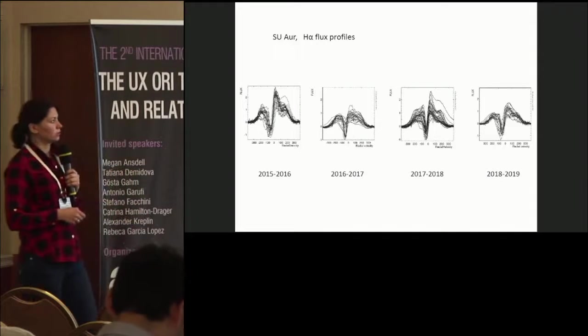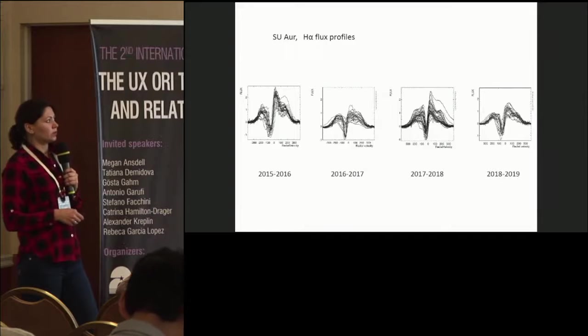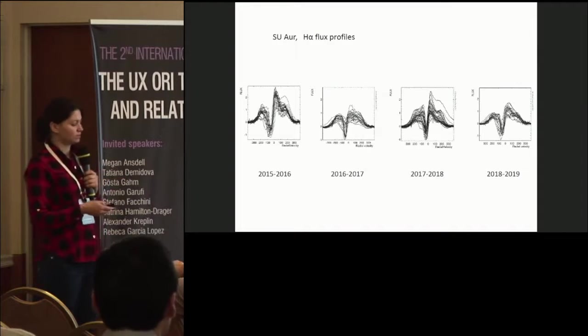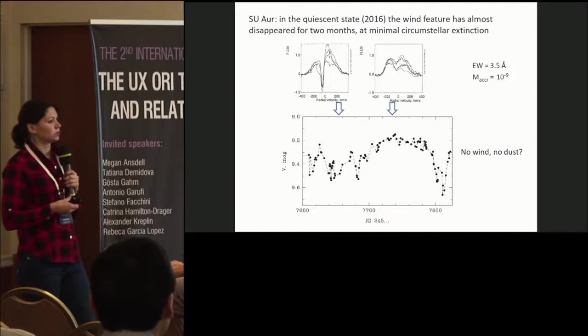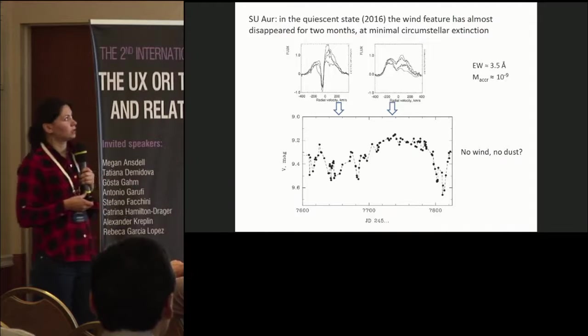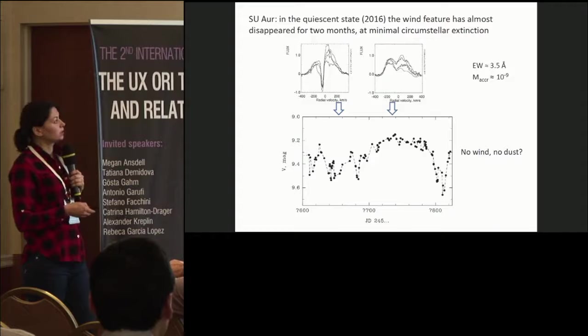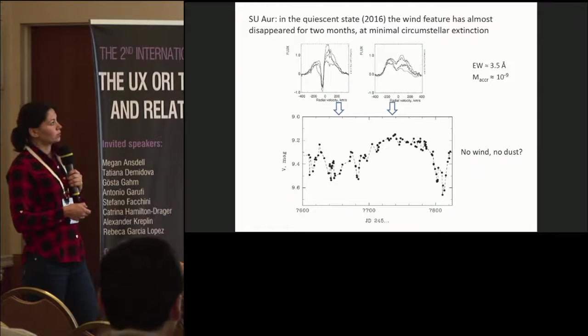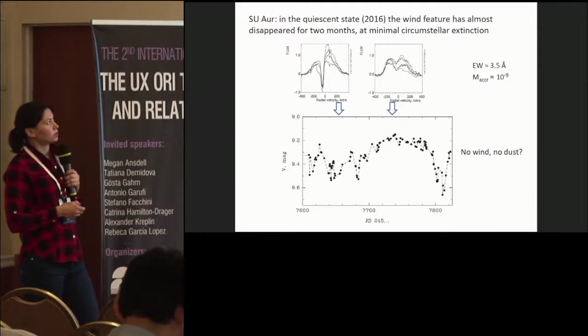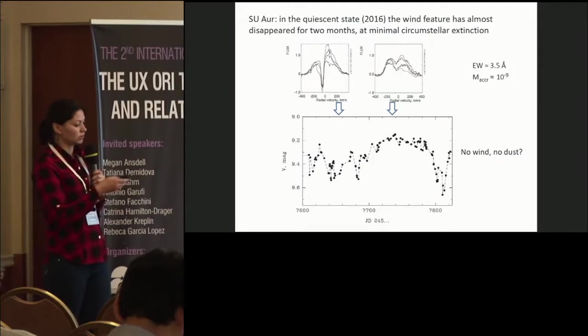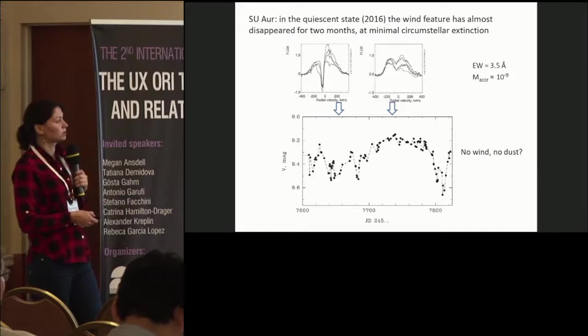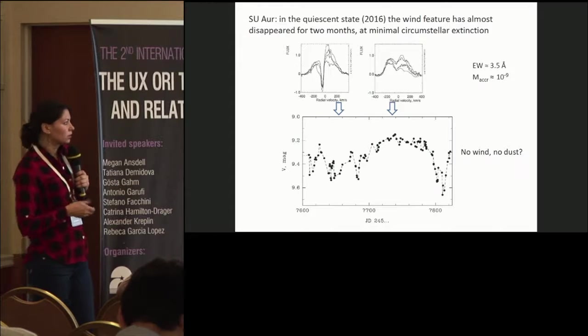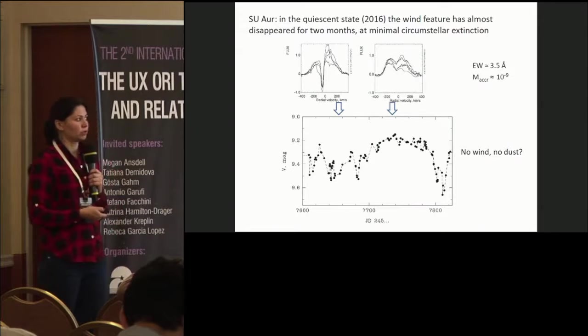And what is remarkable is that during the quiescent state in 2016, during about two months, the wind feature, the central absorption, has almost disappeared. And at the same time, the star was at maximum of its brightness and didn't change much. So what does it mean? No wind, no dust.